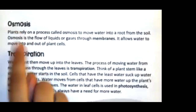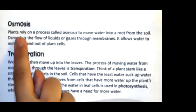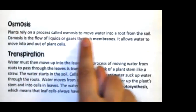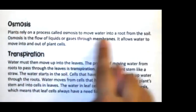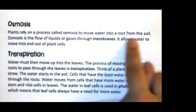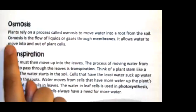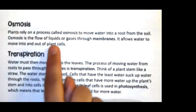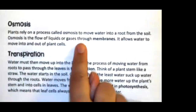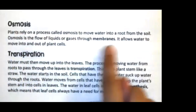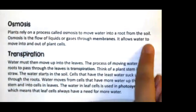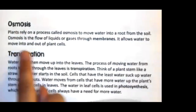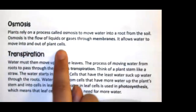Osmosis. Plants rely on a process called osmosis to move water into a root from the soil. Osmosis is the flow of liquids or gases through membranes. It allows water to move into and out of plant cells.